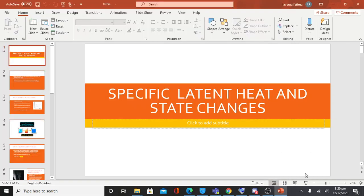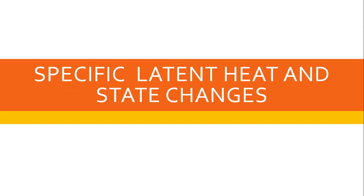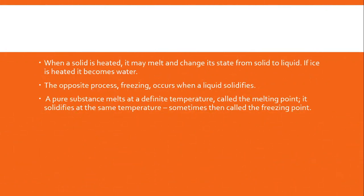The topic I'll be talking about today is specific latent heat and state changes. Before getting into the definition of what latent heat is, it's really important to understand the concept of how a state changes and what processes it goes through. When a solid is heated, it may melt and change its state from solid to liquid. If ice is heated, it becomes water — we expect a block of ice left outside in the sun to melt and turn into water. That is what we call melting.